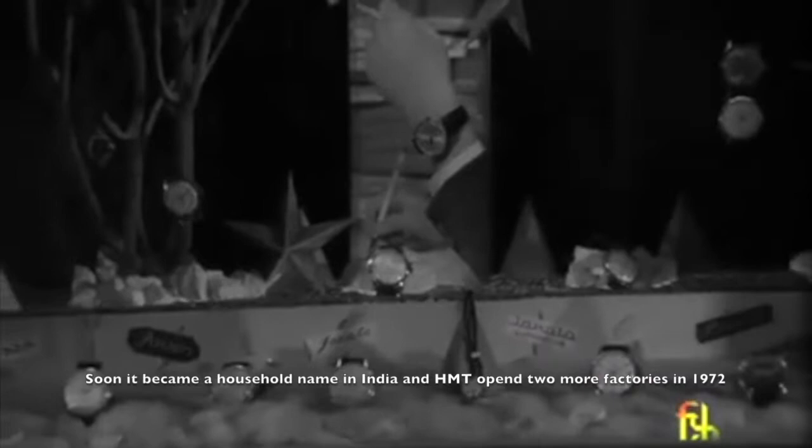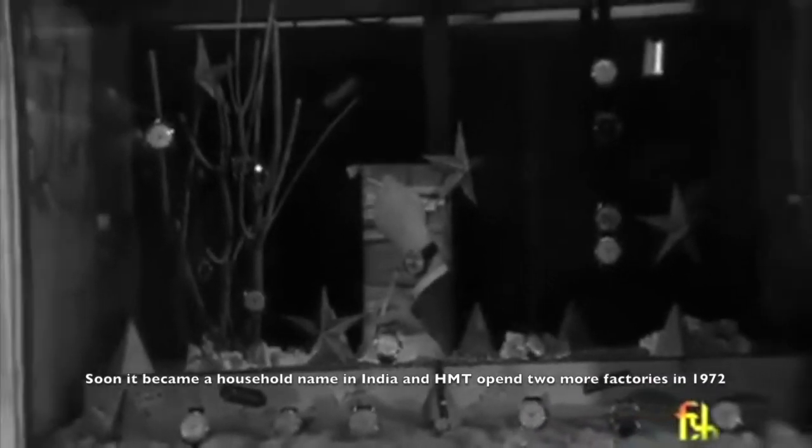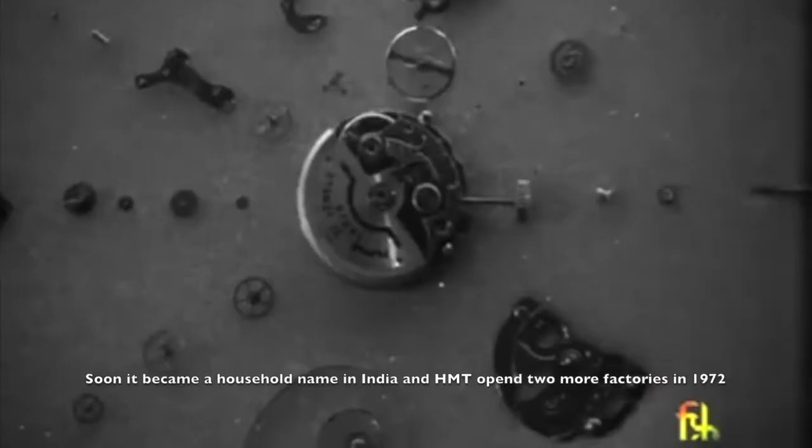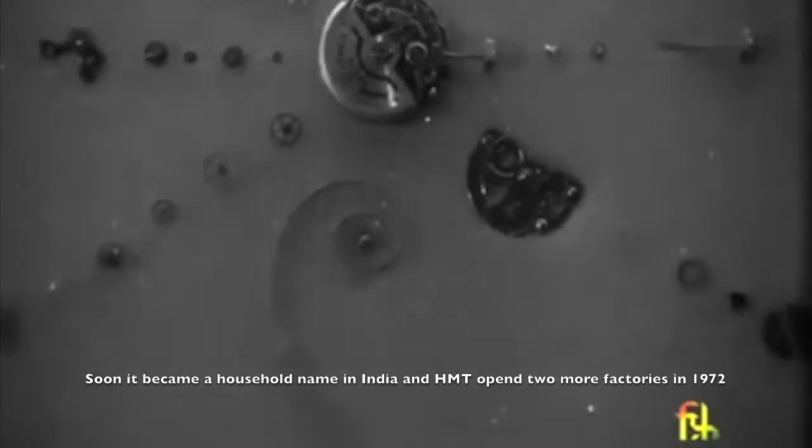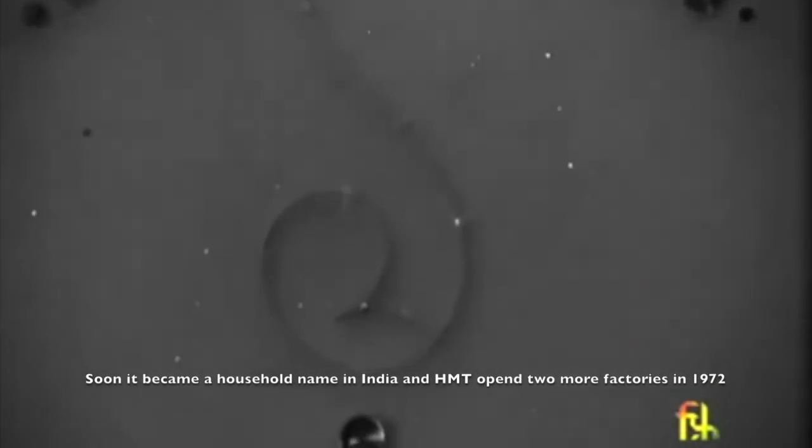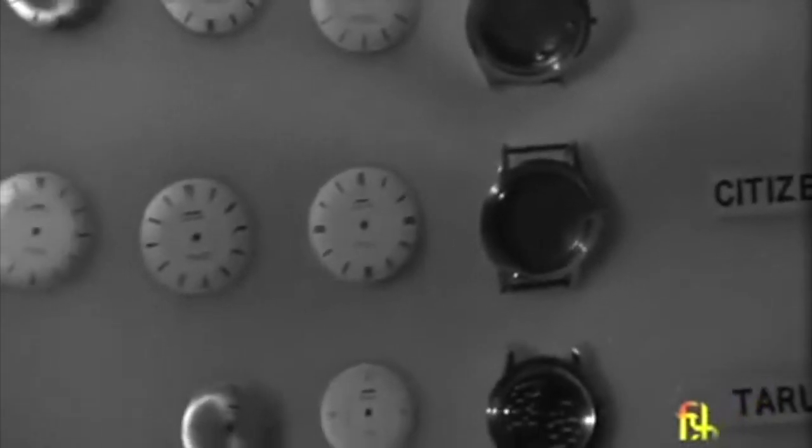It became so popular in the coming days that it became a household name in almost all Indian families. The second factory came in 1972 and the third one also in 1972 in Srinagar. This was followed by the Tumkur and the Rani Bagh in 1978 and 1985. Actually the Tumkur unit was the first one to set up quartz watches.